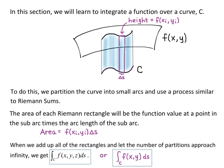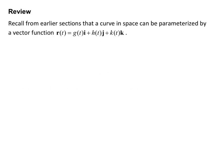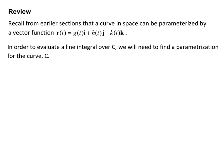In order to evaluate line integrals, we need to review a few things from earlier in the course. Recall that a curve in space can be parameterized by a vector function r(t) equals g(t)i plus h(t)j plus k(t)k. If you only have x and y components, you just leave off the k term. In order to evaluate a line integral over C, we need to find a parameterization for the curve C.